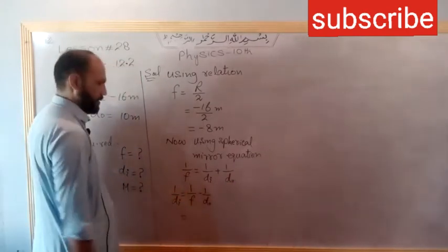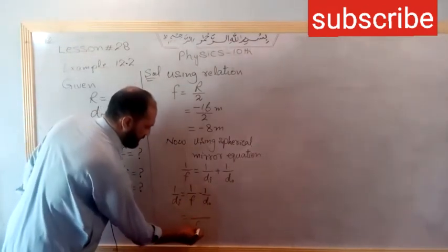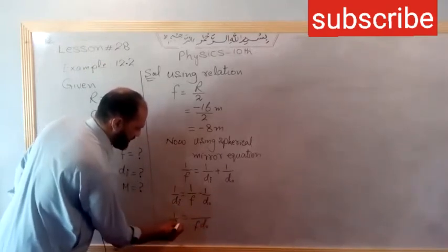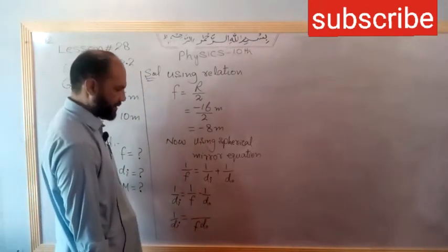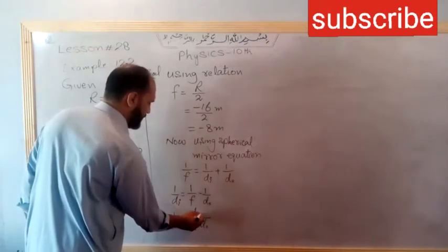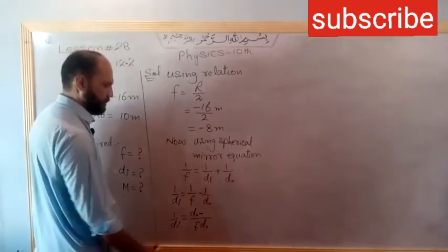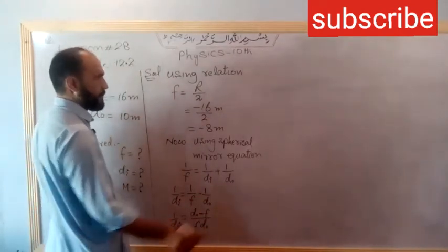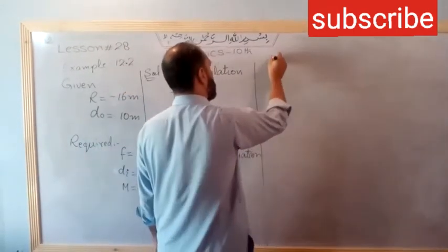Taking LCM, f and d naught. F d naught divided by - one multiplied by d naught and one multiplied by f. So d naught minus f. Taking reciprocal, di equals f d naught divided by d naught minus f.